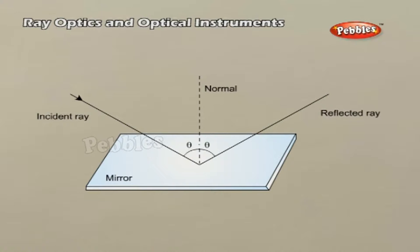The geometric centre of a spherical mirror is called its pole, while that of a spherical lens is called its optical centre. The line joining the pole and the centre of curvature of the spherical mirror is known as the principal axis. In the case of spherical lenses, the principal axis is the line joining the optical centre with its principal focus.